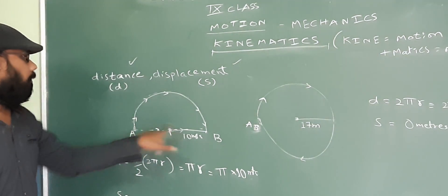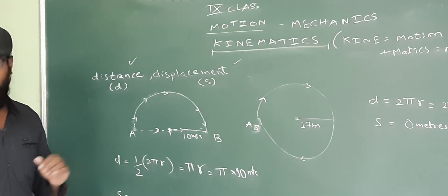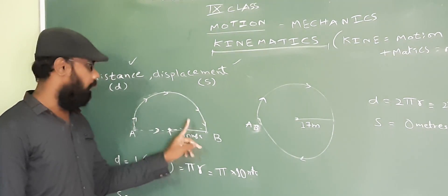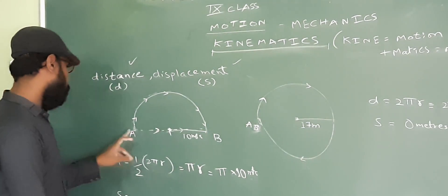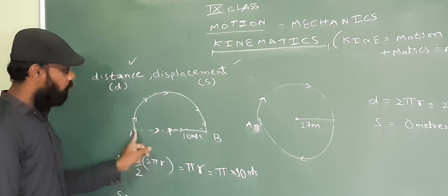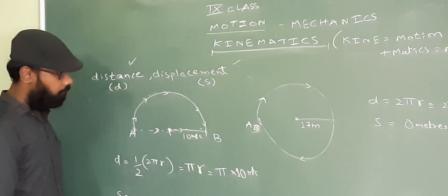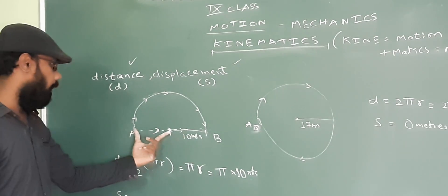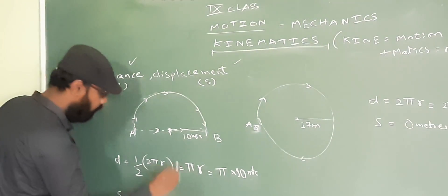In physics, we represent any living or non-living object simply as a 'particle' or a 'body' — so don't be confused when the word particle is used; it just means some object. The particle is displaced from A to B. Since displacement is the change in position represented by a straight line, we draw the straight line from A to B. The radius is 10 meters, so both sides equal 10, making the total displacement = 20 meters.